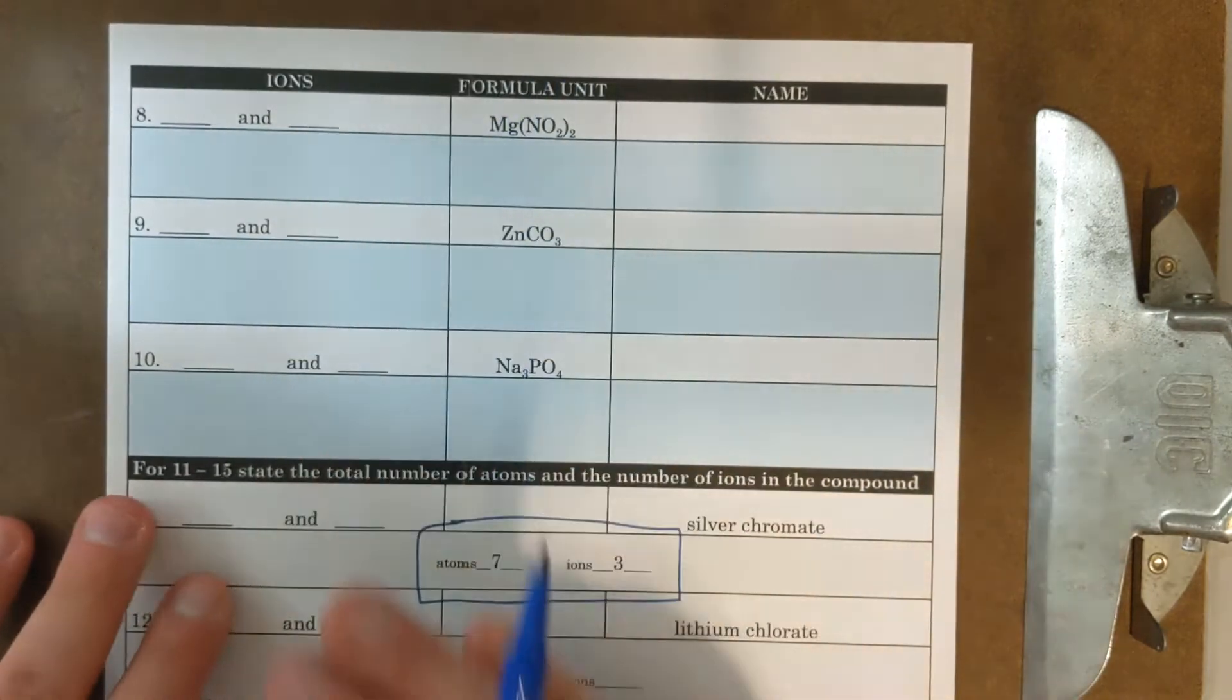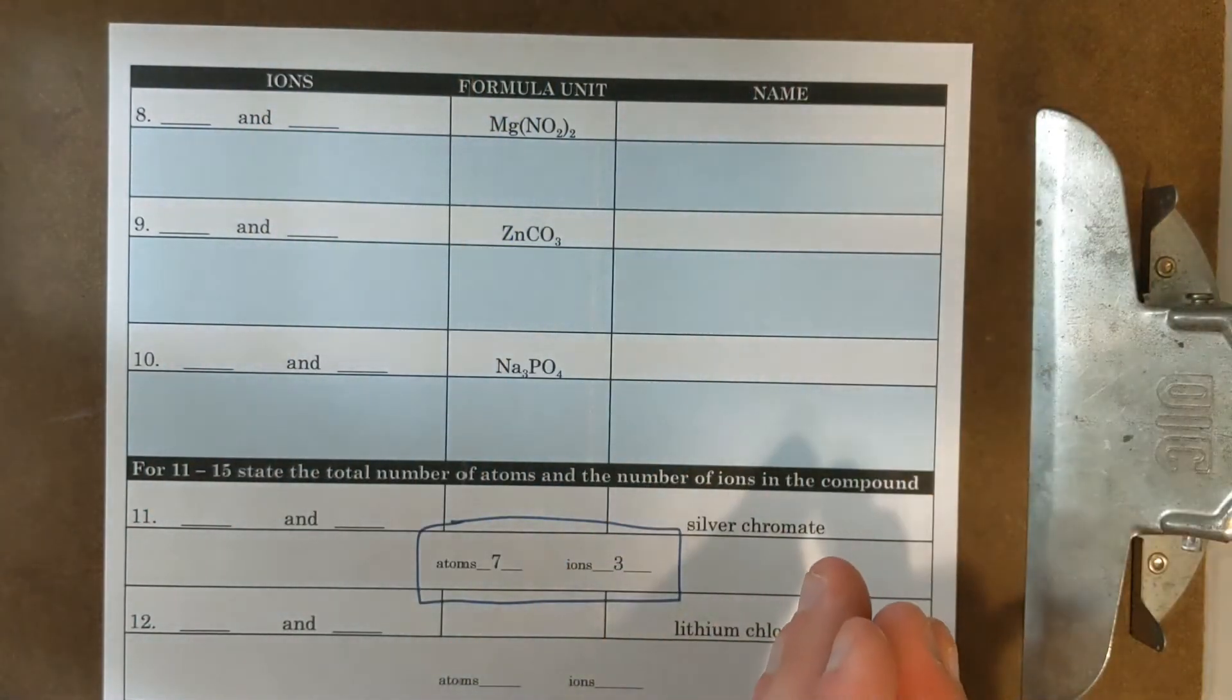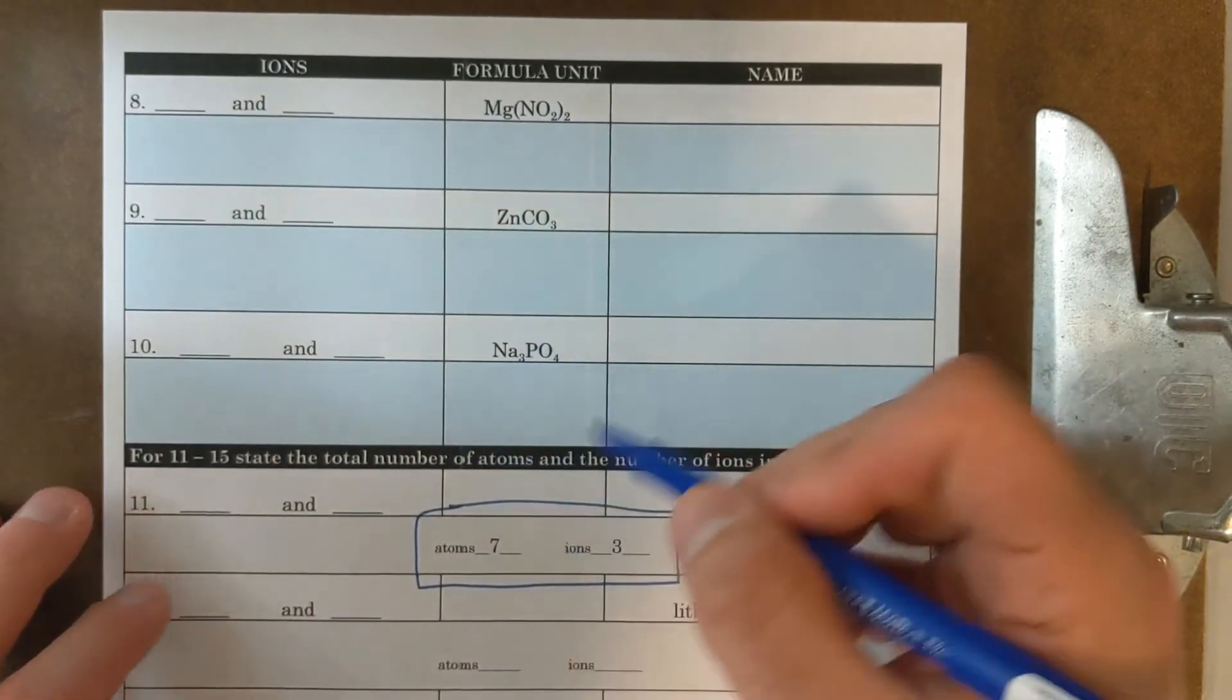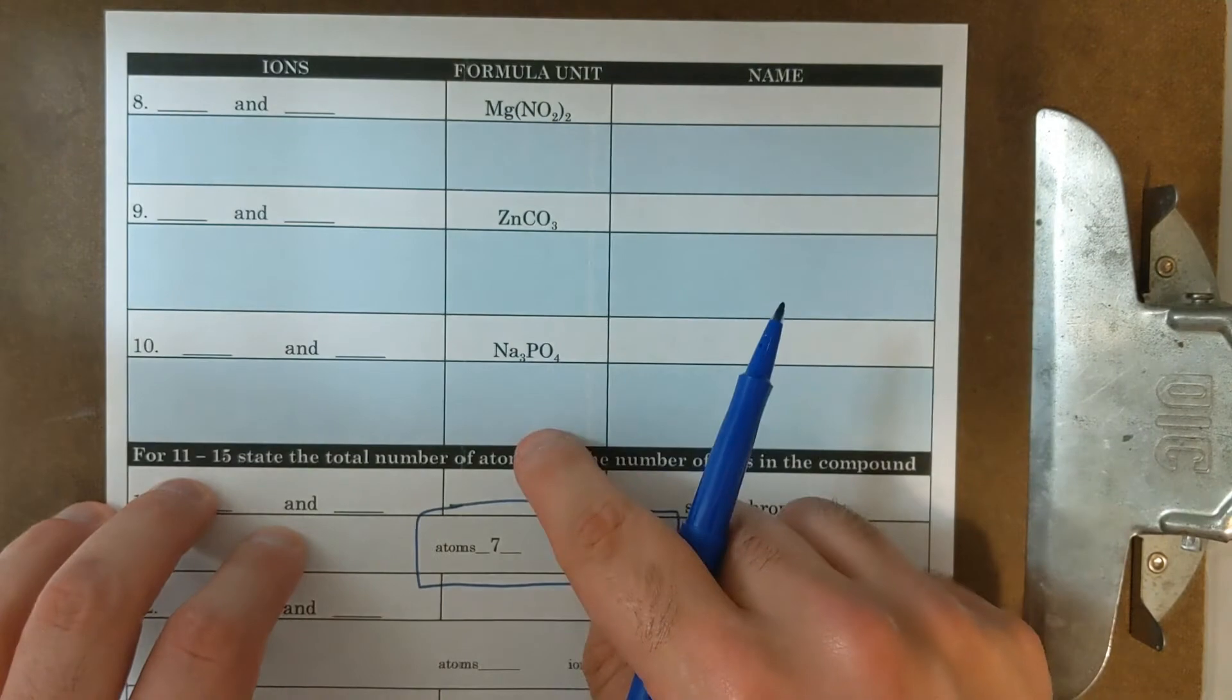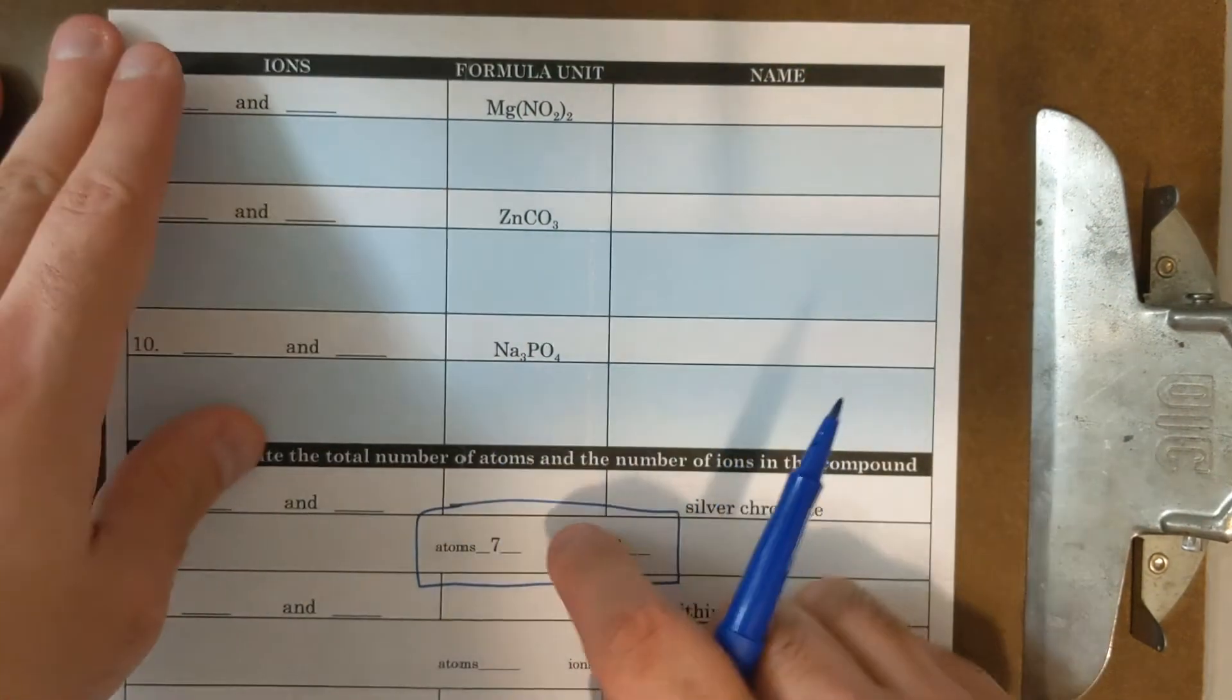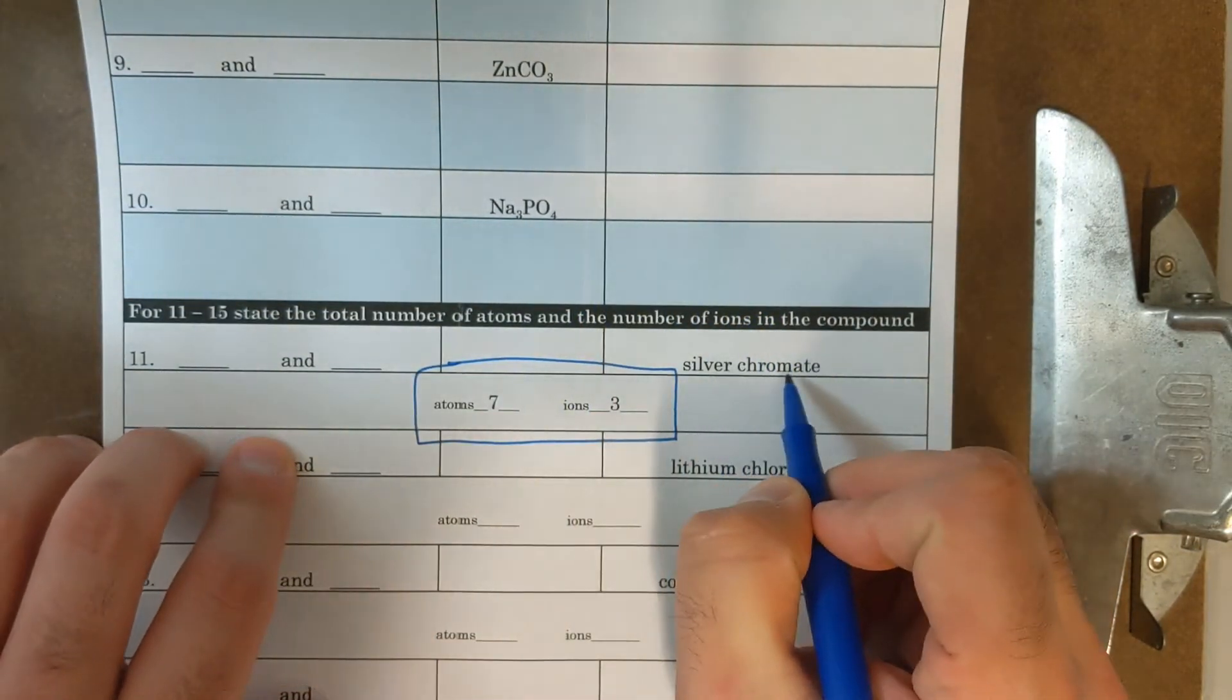So if you notice, there is still the columns of ions, formula unit and name, but you don't have to draw them. So you're not going to have to draw the particles. If you look in questions eight through 10, I already gave you the formulas for them. So you don't have to worry about them. Same thing here. I'm sure I just want the formula in the box.